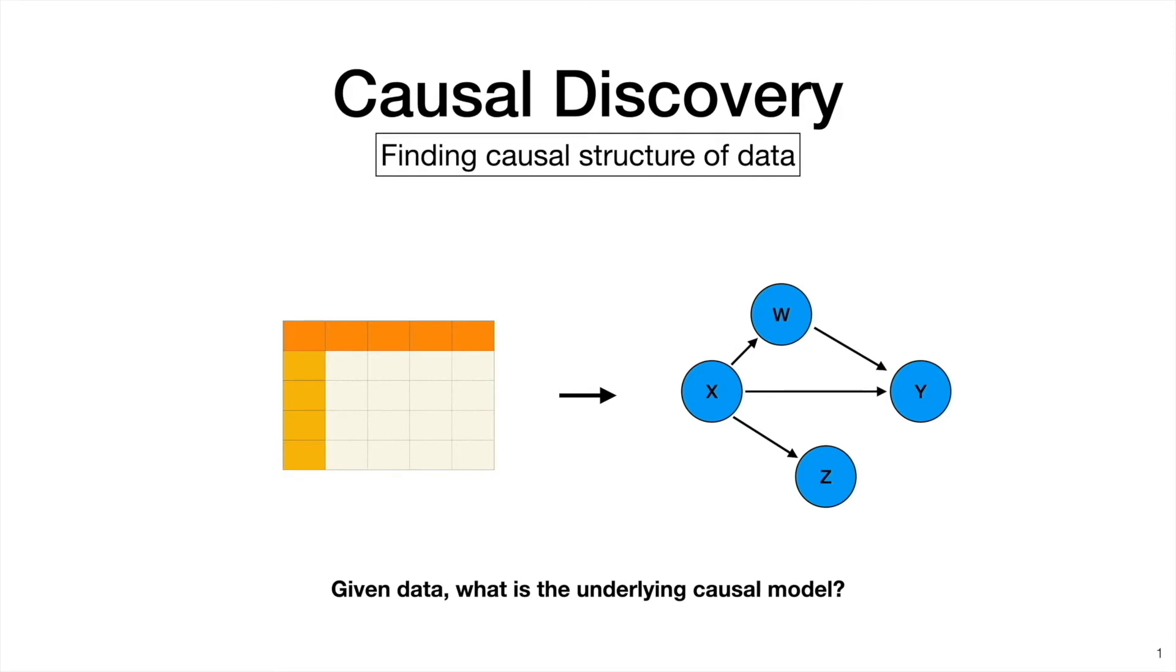Causal discovery is one thing that might help with obtaining a causal model. And the goal of causal discovery is to find causal structure in data. So basically, given data, inferring the underlying causal model.